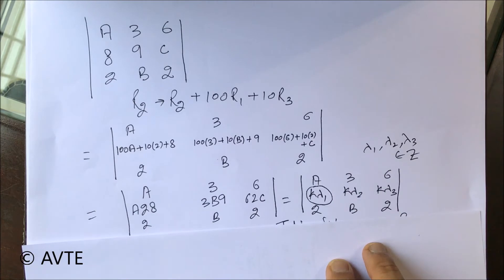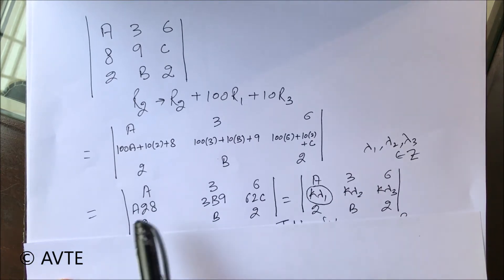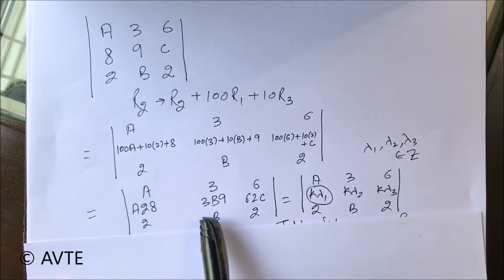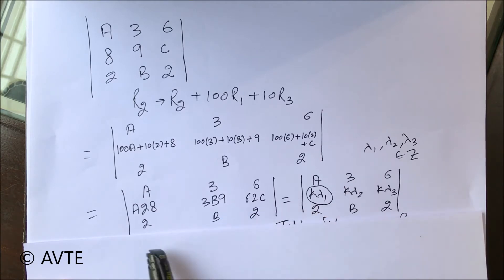You can see that the determinant is taking this shift. The new form is: first row a36, second row now reads a128, 3b09 (300+b9), 602c, and third row 2b2.